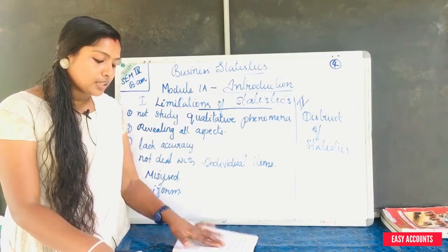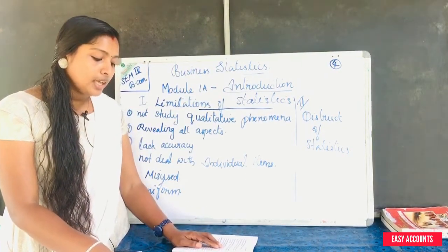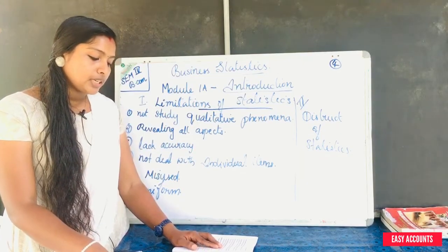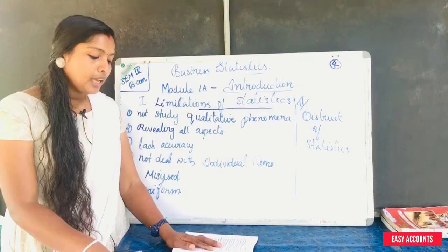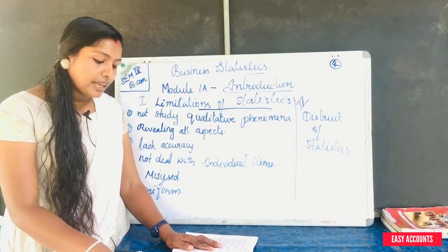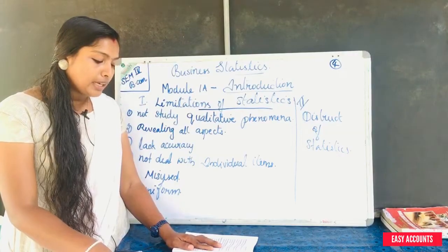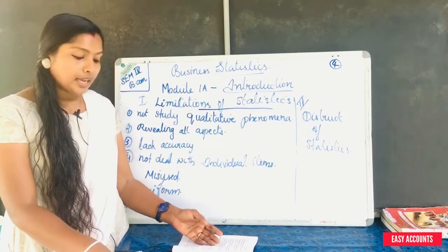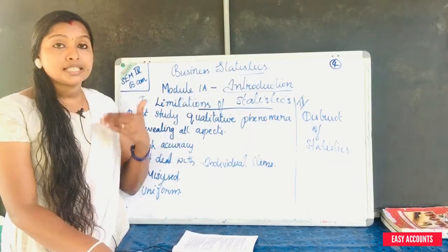Deliberately testing a factor, quoting figures outside their context, inconsistent definition, selection of non-representative statistical units, failure to present complete data, inappropriate comparison, improperly classified data, and data collected by an improper person — these are the main causes that lead to the distrust of statistics.